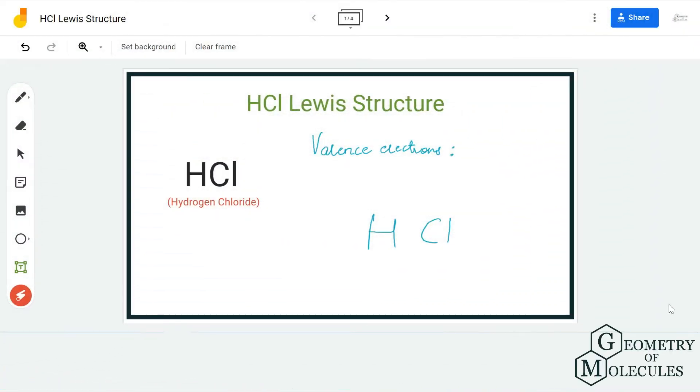Hi guys, welcome back to our channel. In today's video we are going to determine the Lewis structure for HCl. Now HCl is present in two states: when it is in aqueous solution it is known as hydrochloric acid; when it is in gaseous form it is known as hydrochlorine gas.